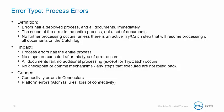Process errors are errors that halt the process and all documents immediately. The scope of the error is the entire process, not a set of documents. Nothing will get processed unless there is a try-catch shape that will process the document down the catch path. After a process error, no other shapes are executed and the entire process will be halted. All documents fail, and it's important to note that there is no checkpoint or commit mechanism, so any shapes that did not successfully execute prior to the error are not rolled back, unless you have an external mechanism to do so.